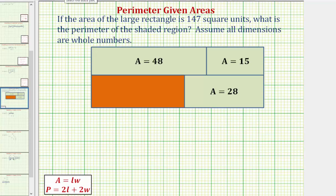To keep things organized, let's call this a sub one, this a sub two, and this a sub three, and therefore the area of the orange rectangle would be a sub four.